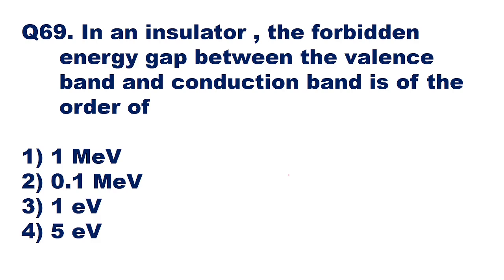If we remember the definition for insulators, we know that insulators are those substances which do not allow the passage of electric current through them. There will be no free electrons flowing through them. Examples include materials like wood, glass, and plastic.